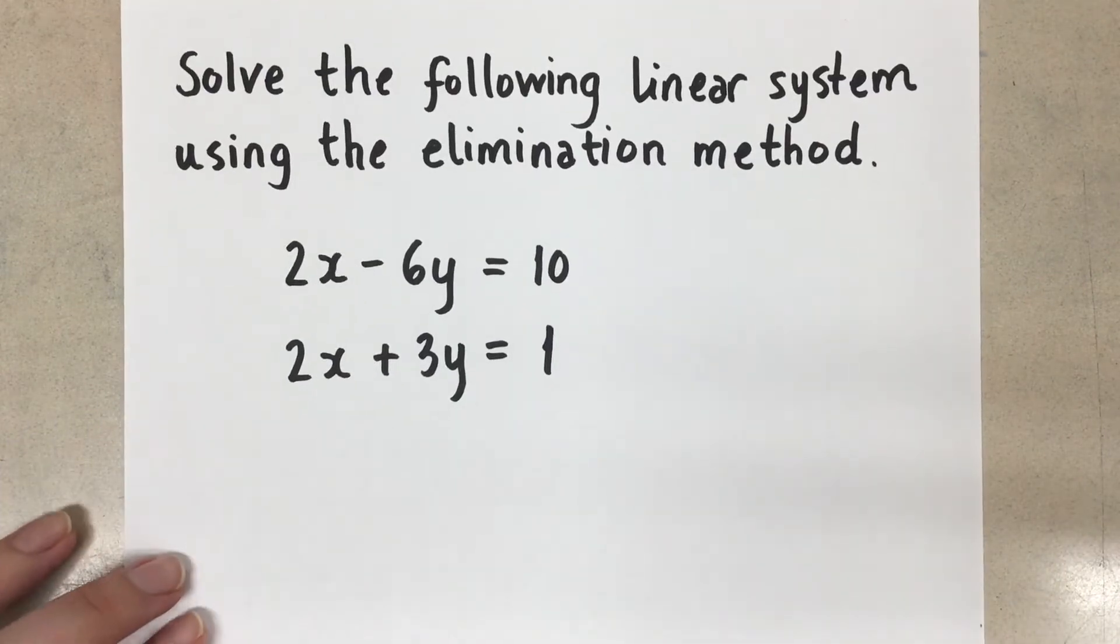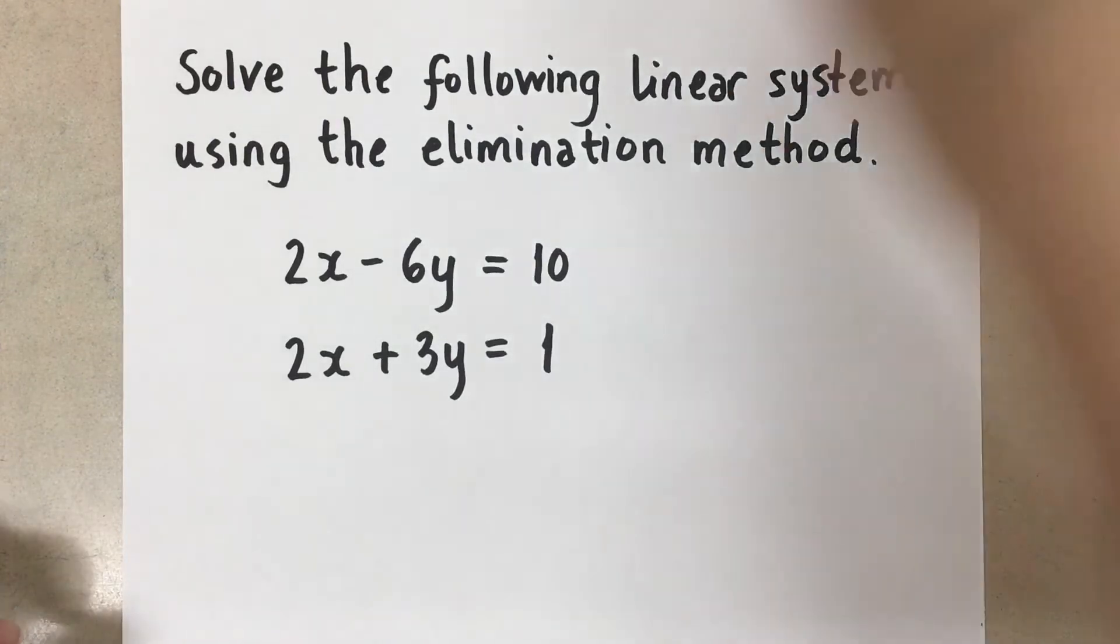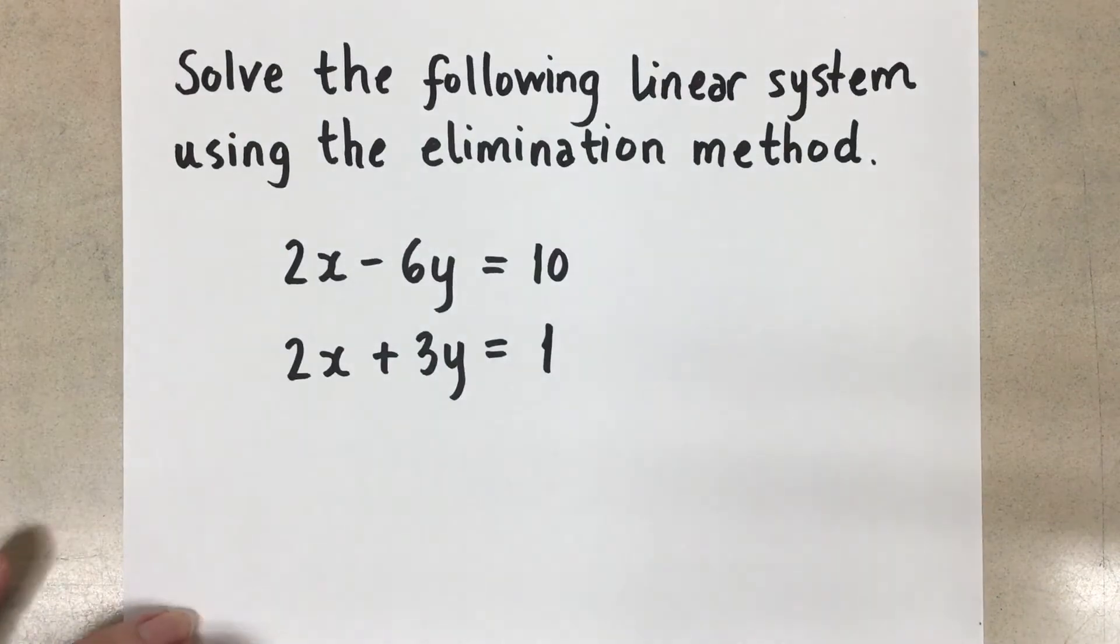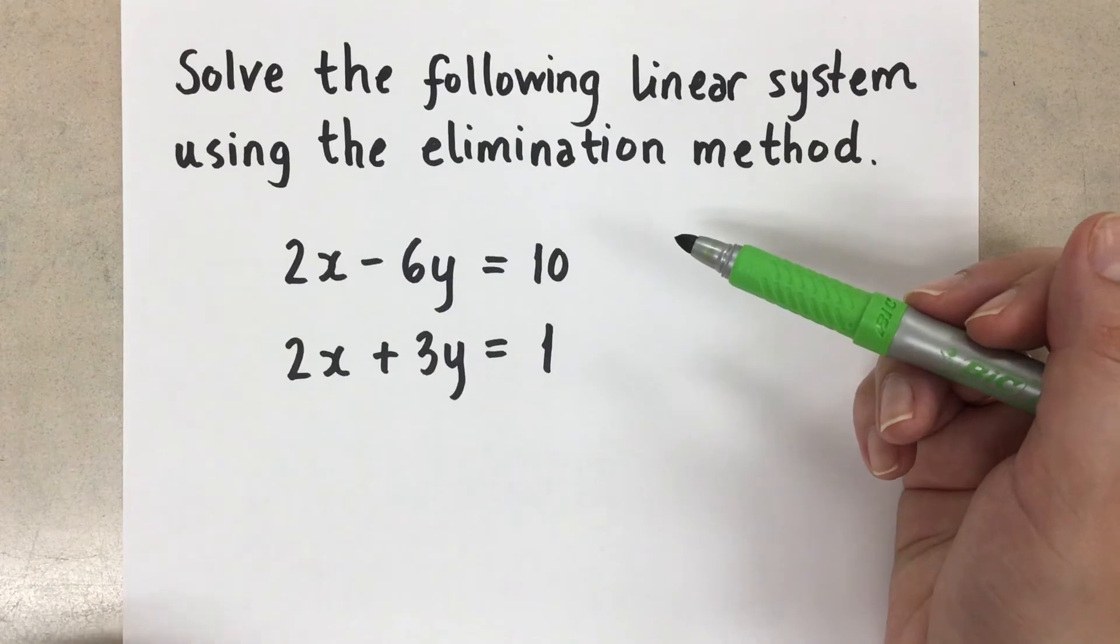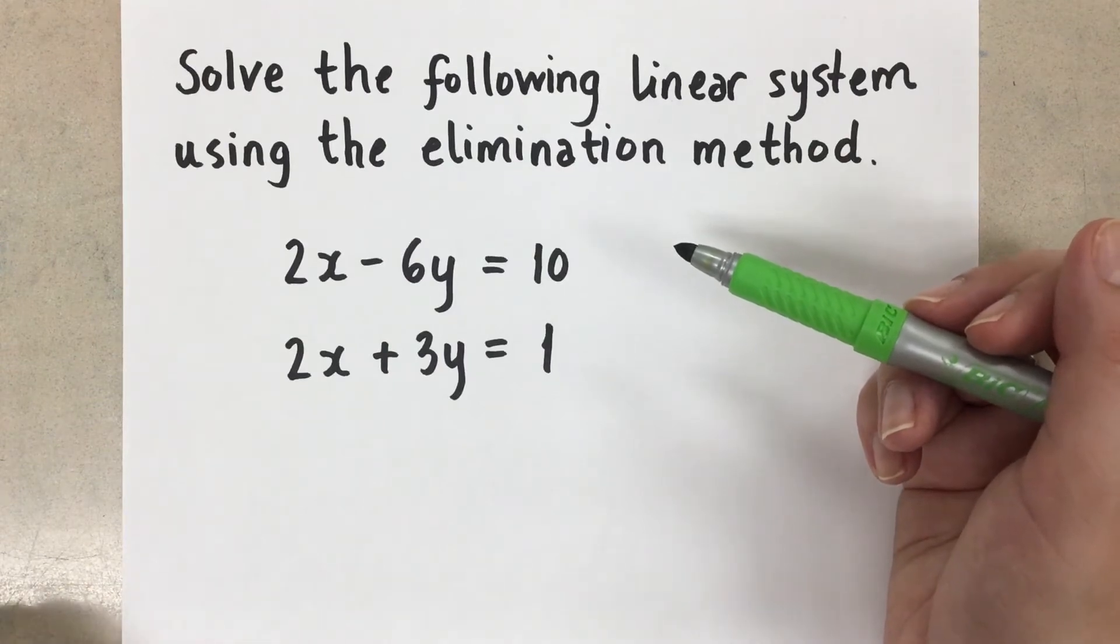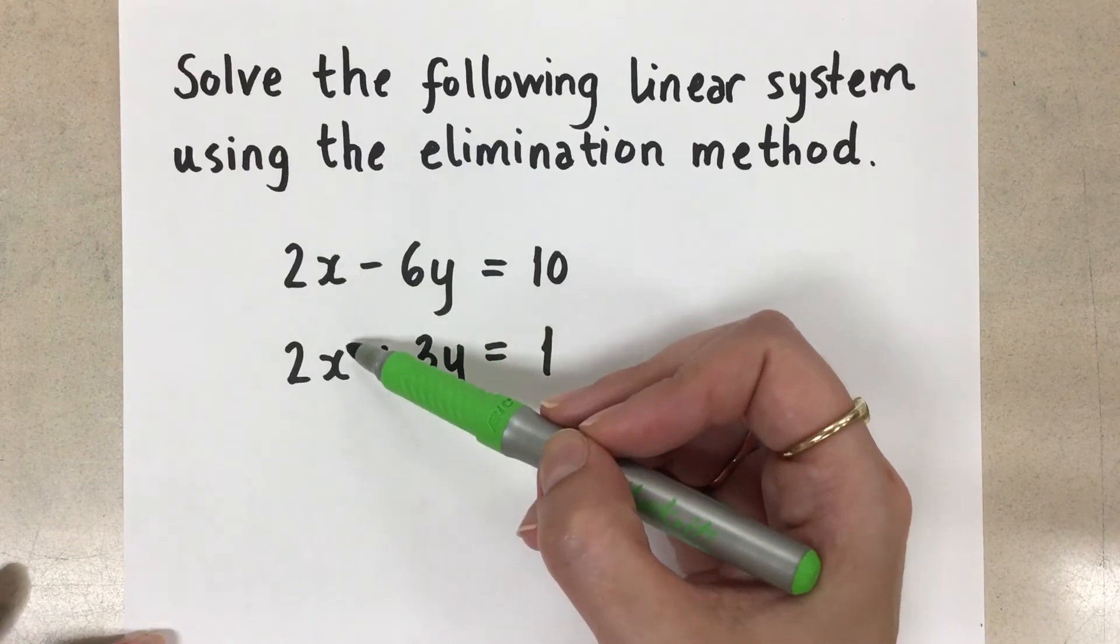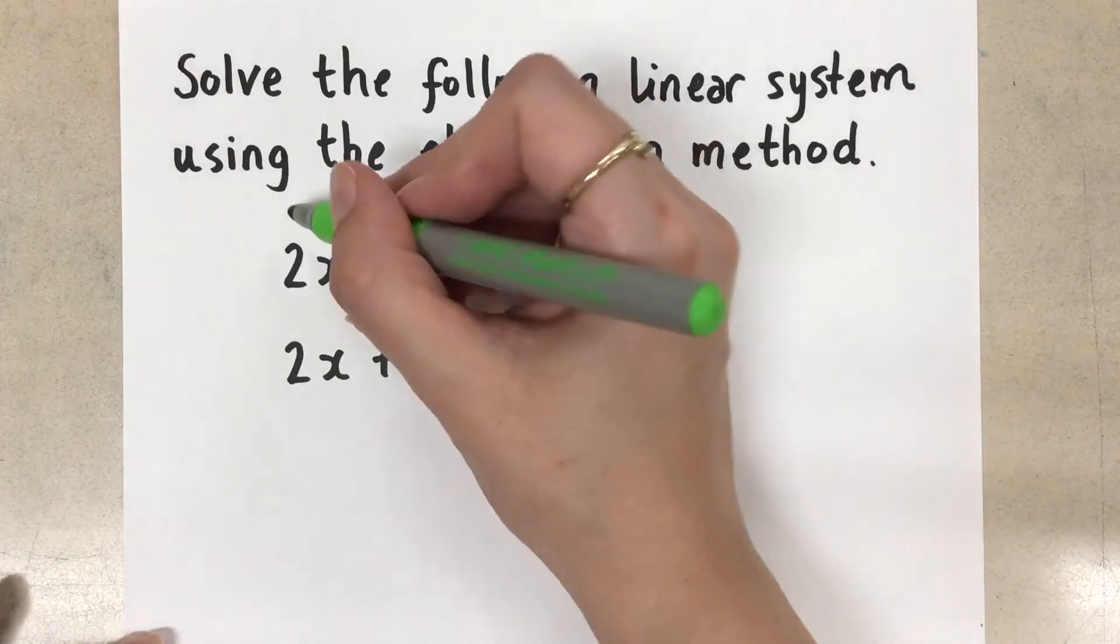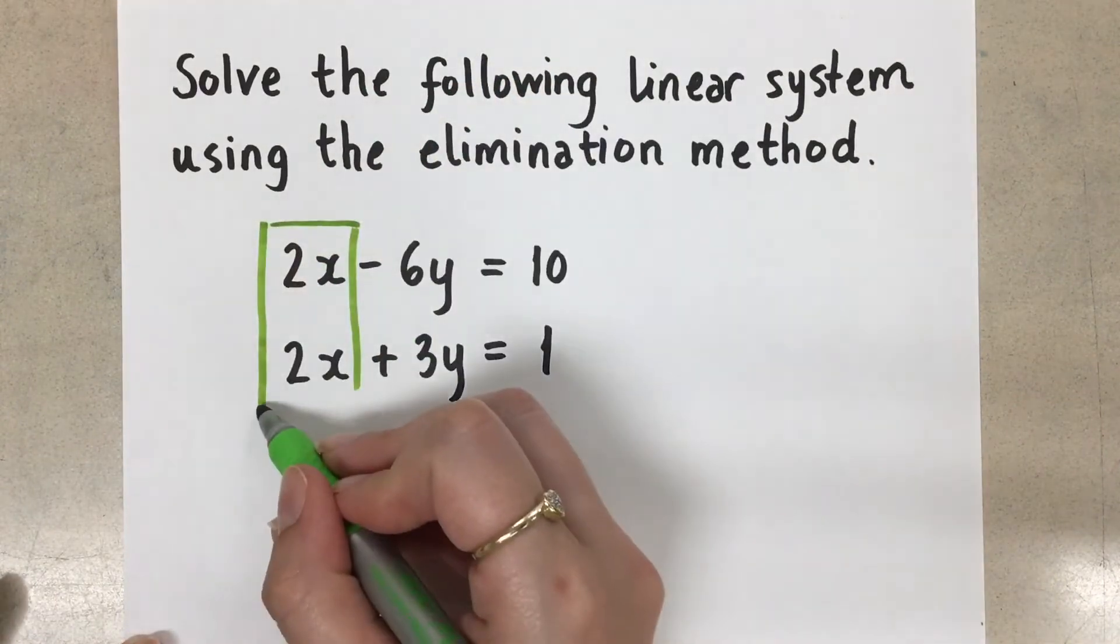That's really important because we're going to add or subtract the equations. And when we do that, we know we can only do that with like terms. So they need to be in the proper columns here. So we need to first identify which variable we want to eliminate. So you look for the two same variables that have the same coefficient in this case. So here I have a 2x and a 2x. So the coefficients are both two. So this column is the column that we want to try to eliminate.